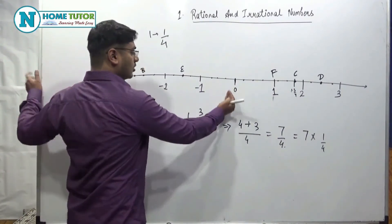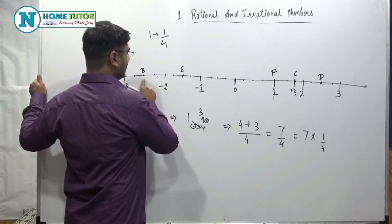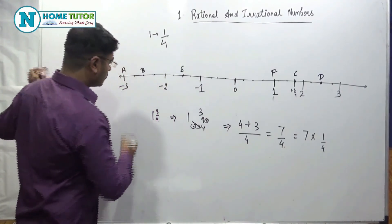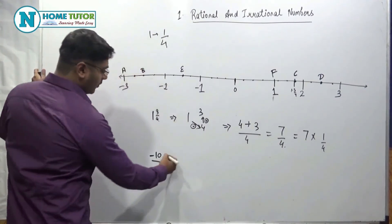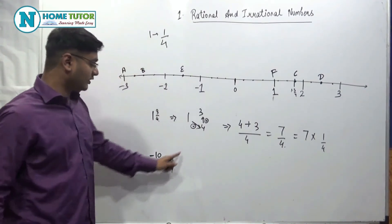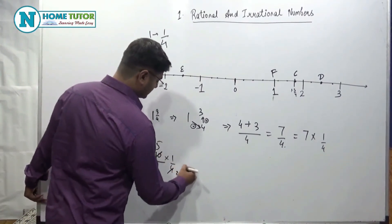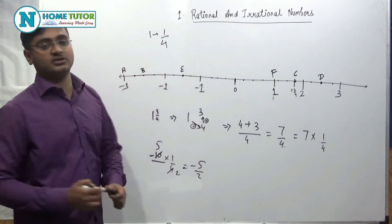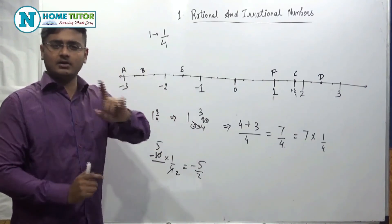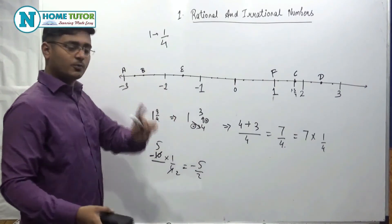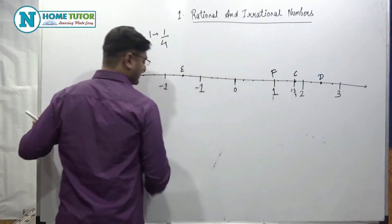Point B could also have been calculated this way: count how many points it is from 0 — 1, 2, 3, 4, 5, 6, 7, 8, 9, 10. So B is the 10th point, meaning minus 10 into 1 by 4, which equals minus 10 by 4, simplified to minus 5 by 2. This is a better method: first count which numbered point it is, then give it the appropriate sign based on whether it is on the right (positive) or left (negative) side.